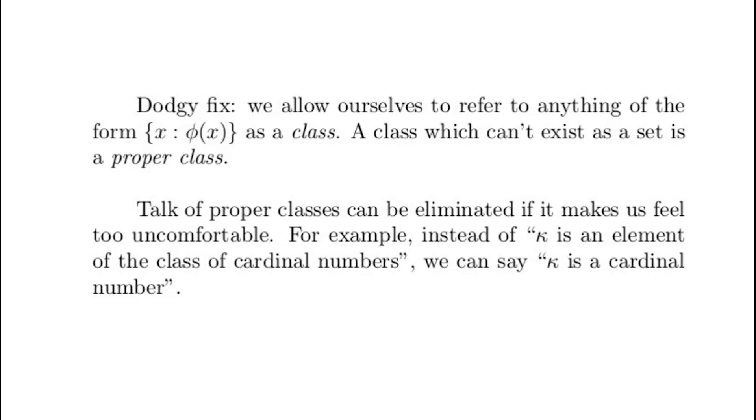So classes fall into two lumps. A class whose existence we can prove from the axioms of set theory is a set, and the others are called proper classes. Using the axiom of pairs, it's possible to show that a class is a set if and only if it's an element of another class. That's a criterion you often see quoted.